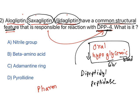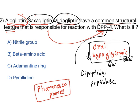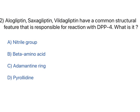In medicinal chemistry, groups of atoms responsible for a drug's mechanism of action are called pharmacophores. You need to identify the common structural feature present in all three drugs. The options given are: nitrile group (cyano group), beta amino acid, adamantane ring, and pyrrolidine.